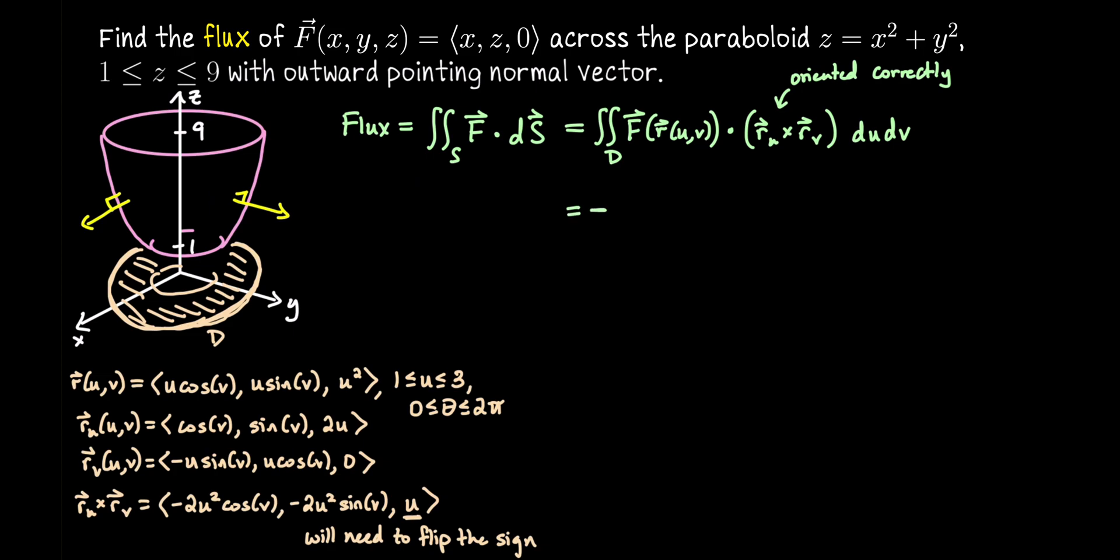So I'll start plugging in. And I'm going to have this negative out front because of our backwards orientation. And then we're going to do a double integral where the domain for the parameters are from 0 to 2π, and from 1 to 3.